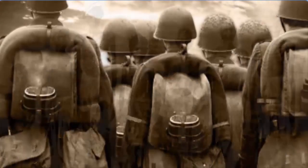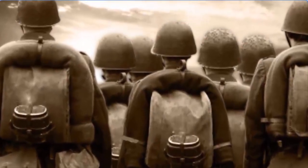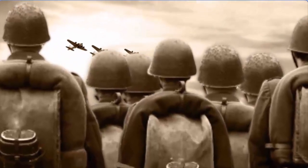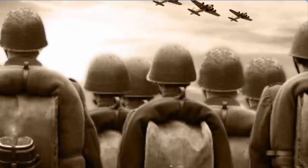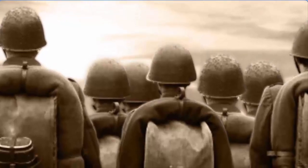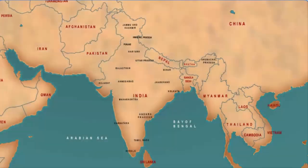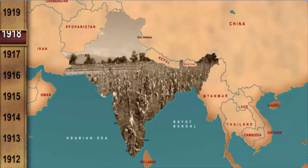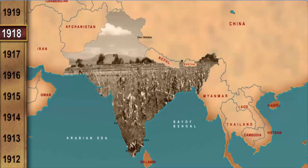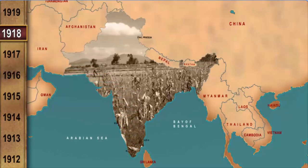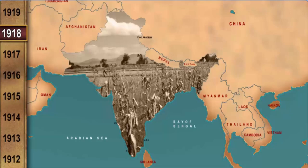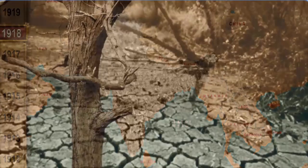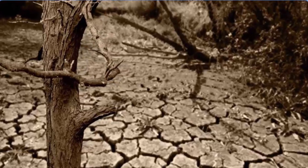The situation worsened during 1918 when India was hit by crop failure and shortage of food grains. To make matters worse, the crop failure was further followed by famines and outbreak of influenza. This harsh social and political situation set the stage for the beginning of the nationalist struggle in India. The Indian freedom movement gained momentum with the coming of Mohandas Karamchand Gandhi, later known as Mahatma Gandhi.